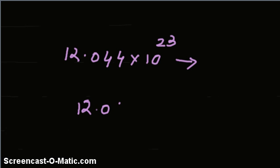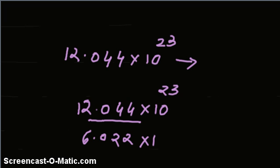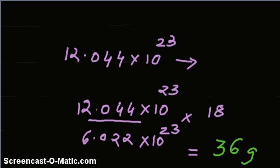Therefore, 12.044 × 10²³ molecules would have how many grams of mass? The answer is 12.044 × 10²³ divided by 6.022 × 10²³ × 18, and the answer is 36 grams.